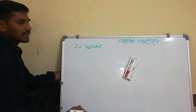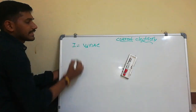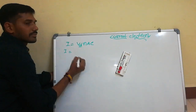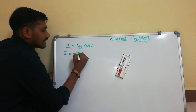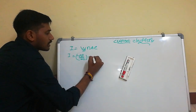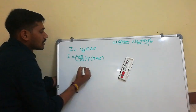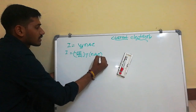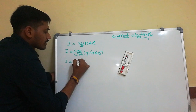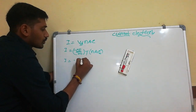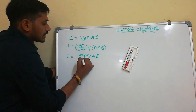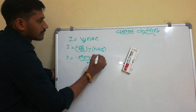Next, what is the relation between resistance and relaxation time? We know I = Vd × NAE, and Vd = -(eE/m) × tau. Substituting, I = -(e²/m) × N × tau × A × E. Now V = E × L, so E = V/L. Substituting E = V/L, we get I = -(Ne²τA / mL) × V. Since by Ohm's law I = V/R, comparing both sides gives R = mL / (Ne²τA). This is the relation between resistance and relaxation time.